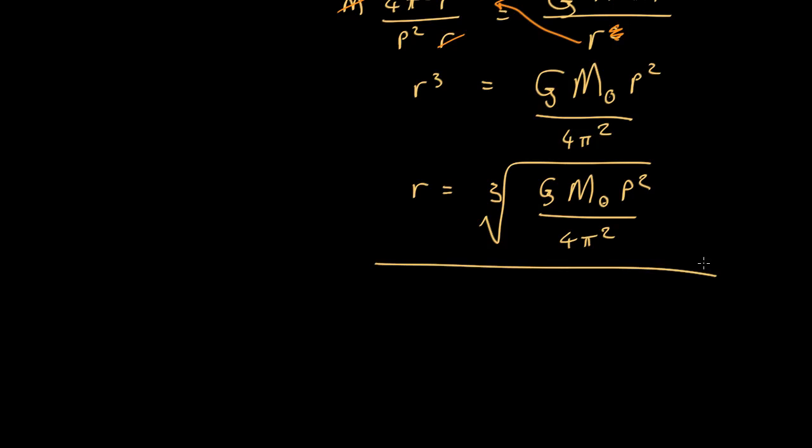Now for the first pulsar, we know the period is about a second. So if we put one second into here and we assume it's got the mass, something like the mass of the sun, we find out that this critical radius comes out at about 1500 kilometers.